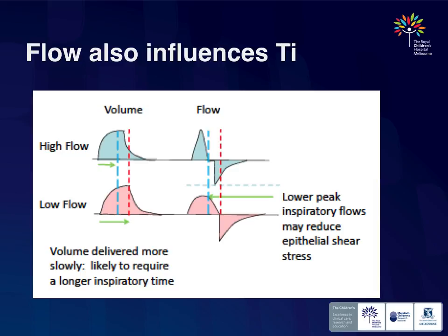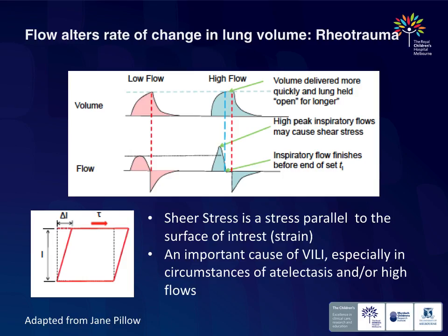Fast flow in the wrong conditions creates shear stresses on the airway and alveolar surface — and we all know about shear force injury as a way of causing lung injury. If flow is too fast, we may be pushing very high pressures very quickly into the lungs. This is a relevant factor.